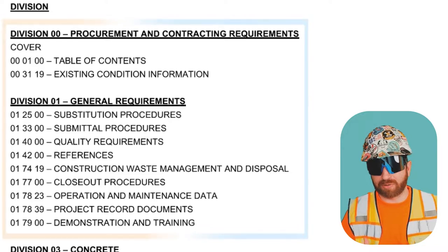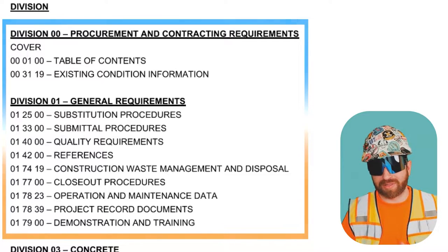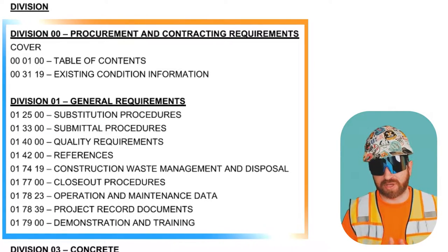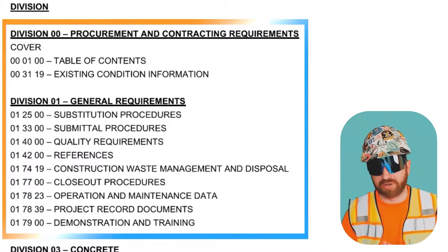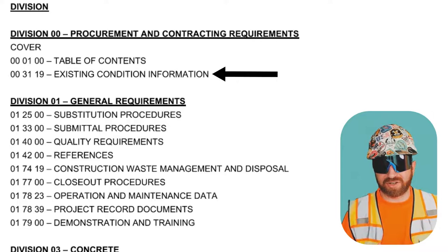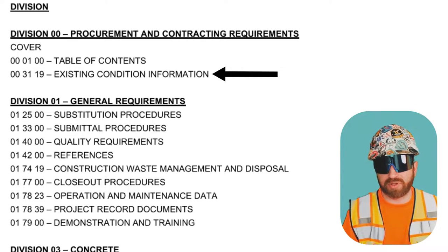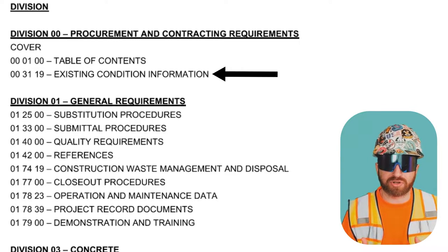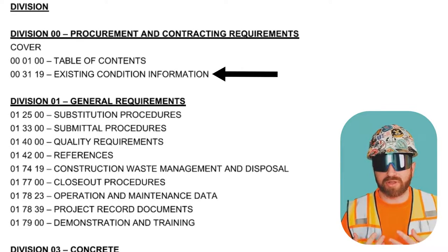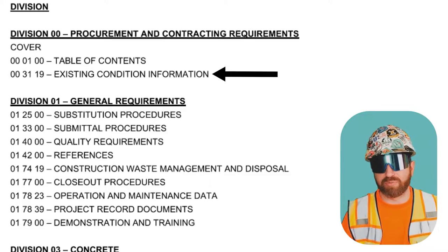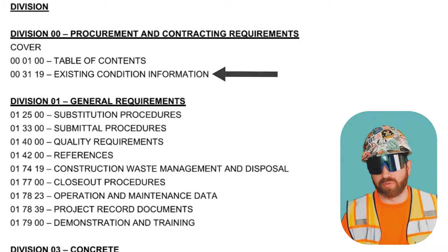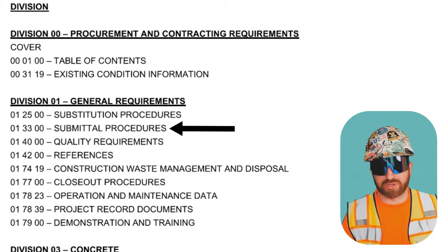I'm going to briefly cover the general requirement items, and then I'm going to jump into a specific specification section. Existing condition information could range from site surveys — which are usually external reference documents showing where past buildings and underground structures may exist — to geotechnical reports, which would tell you the composition of your building soils before you get started. Submittal procedures.